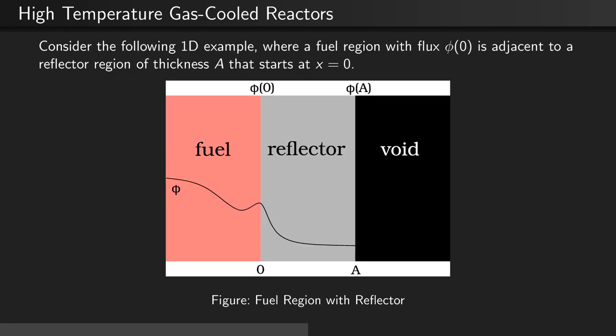Consider the following one-dimensional example where a fuel region with a flux phi sub zero at the boundary of the fuel is adjacent to a reflector region of thickness a that starts at x equals zero. This can be seen in this diagram here.